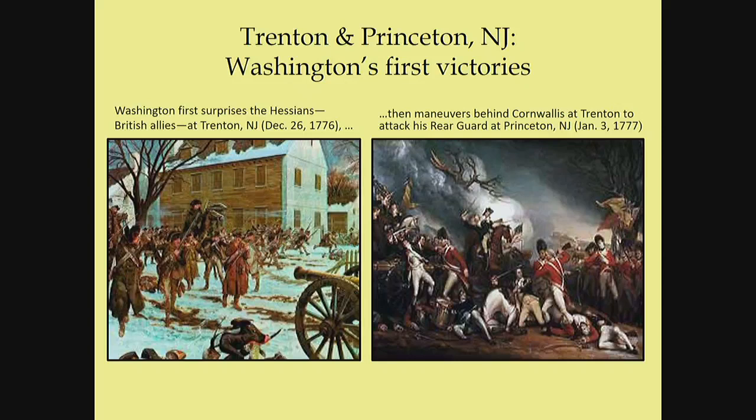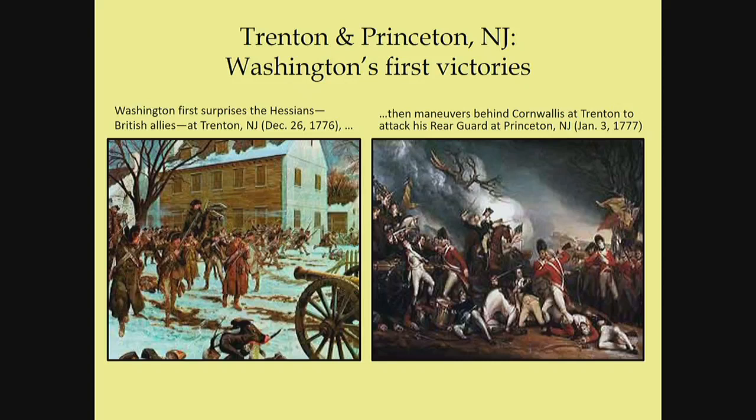They would bring one army down the St. Lawrence River to attack Fort Stanwix, commanded by Lieutenant Colonel Barry St. Leger. They'd also bring an army commanded by General Burgoyne from the north, proceeding down the Hudson River Valley toward Albany, where they met resistance at Saratoga. A third army was to come up from the south commanded by General Howe. The three-pronged assault aimed to divide New England and converge in Albany — but the third army never made it to Albany or Saratoga.